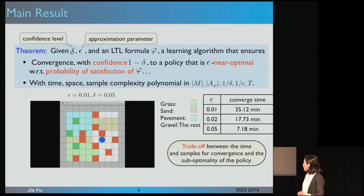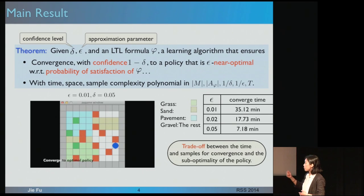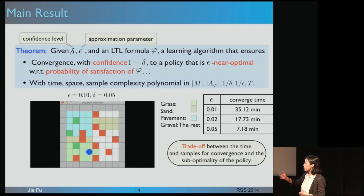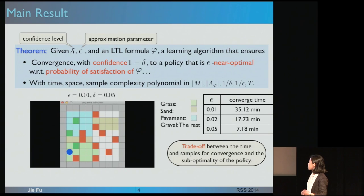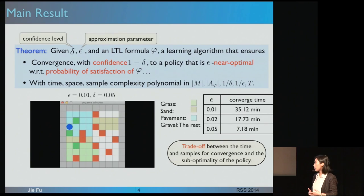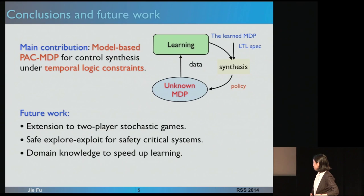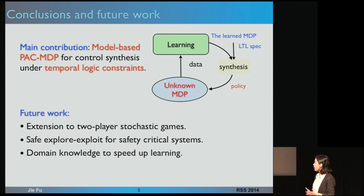We can modify the parameters to make a trade-off between convergence time and sub-optimality of the policy. Our main contribution is to develop a PAC-MDP method to handle temporal logic constraints. If you are interested in this work and future directions, please come to my poster session at F5.